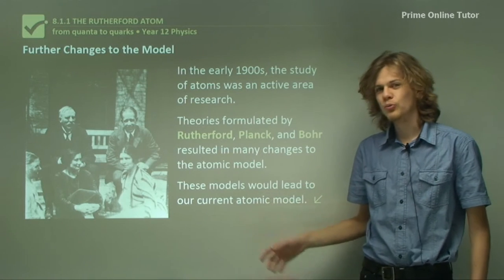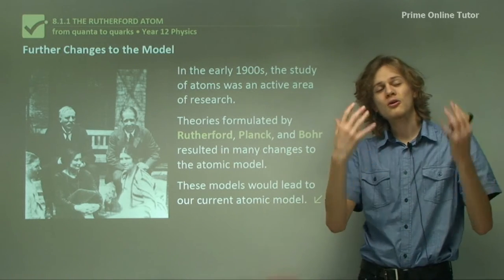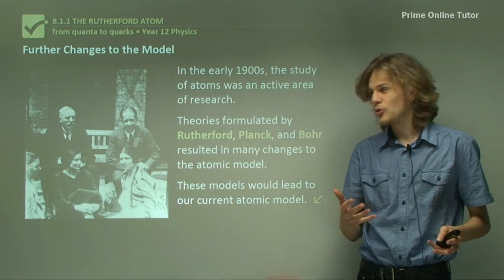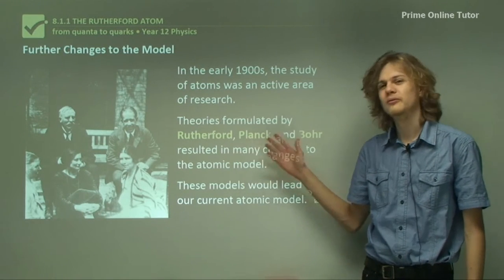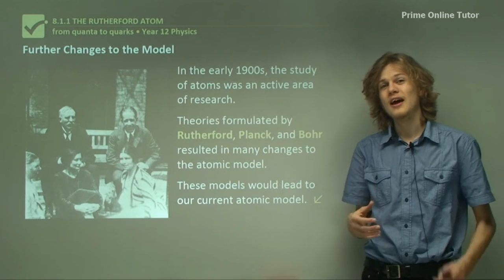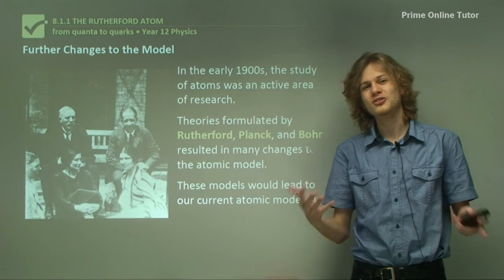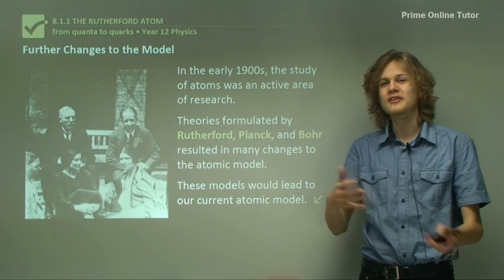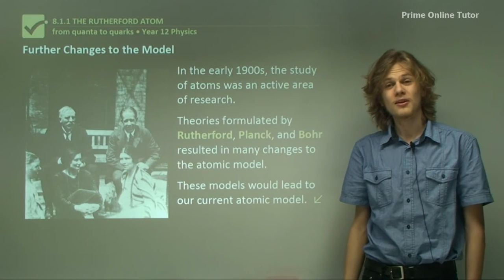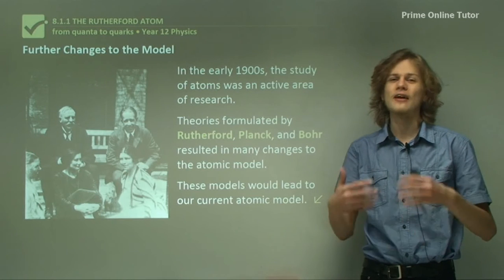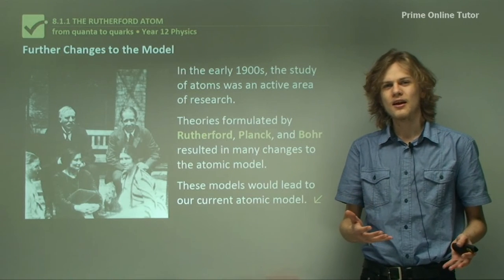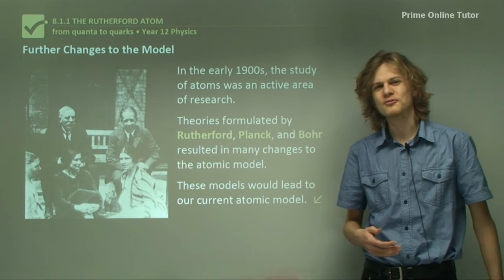So these models would eventually lead to our current model of the atom, which of course is quite different to the original models that these scientists proposed and very different to the historical models of John Dalton and the classical elements. Well, that's the end of the theory. So we've covered some of the history of atoms and of elements in this section. Let's just go on to some questions to make sure you've got it all down.